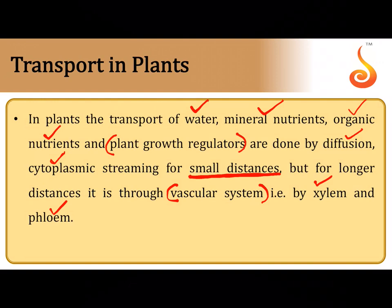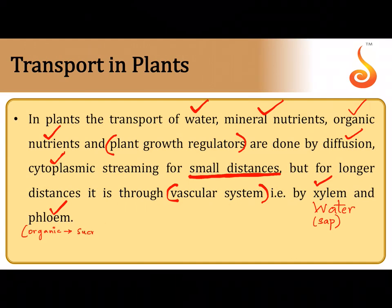Water and minerals are transported through xylem in the form of xylem sap. Organic substances such as sucrose are transported through phloem. So the two types of transport are short distance transport and long distance transport.